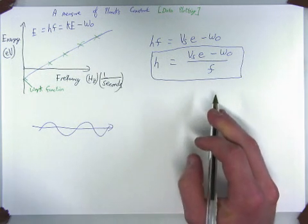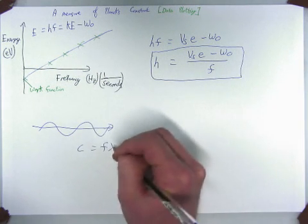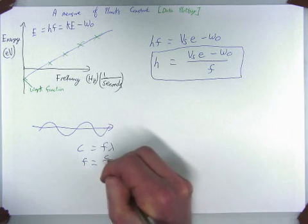Or, you know, it's like a wave. C equals frequency times the wavelength, so F equals C divided by lambda.